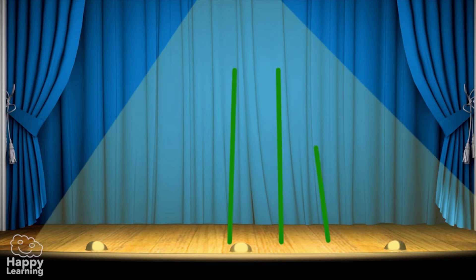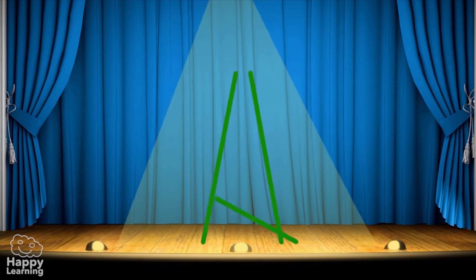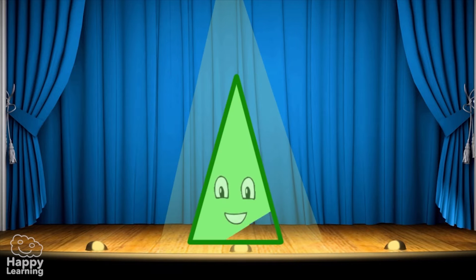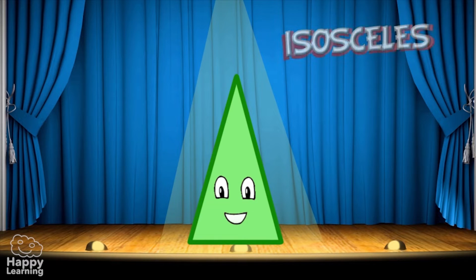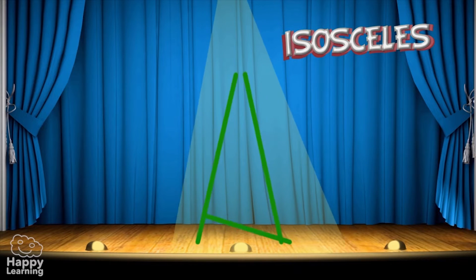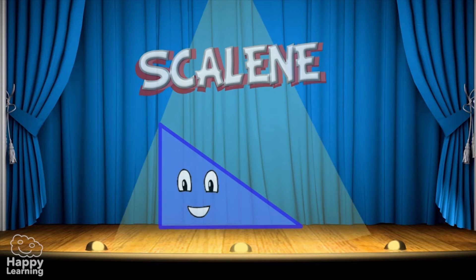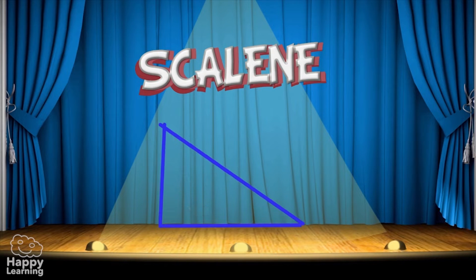In an isosceles triangle, two sides are the same length and one is different. See how it's formed? Great. So this is an isosceles triangle with two equal sides and one different one.